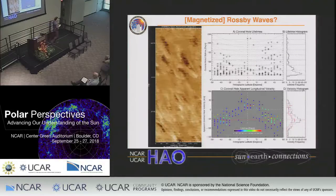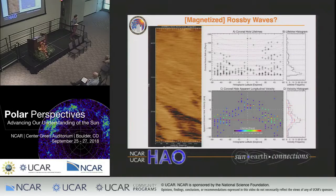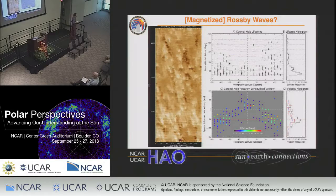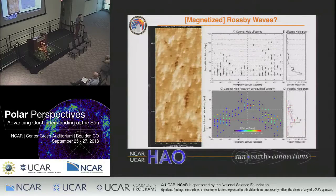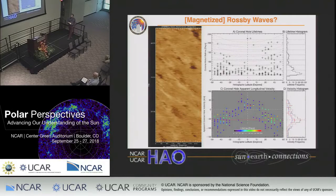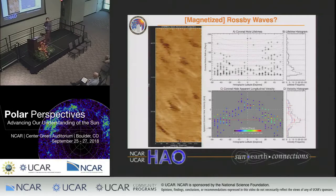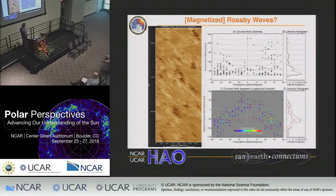One of the prevailing theories about coronal holes, of course, is they're to do with active region diffusion. Do we know what percentage of coronal holes are due to active region diffusion? Is it 100%? Is it 50%? With a data set like this, you can unambiguously tell. Turns out, it's not 100%.